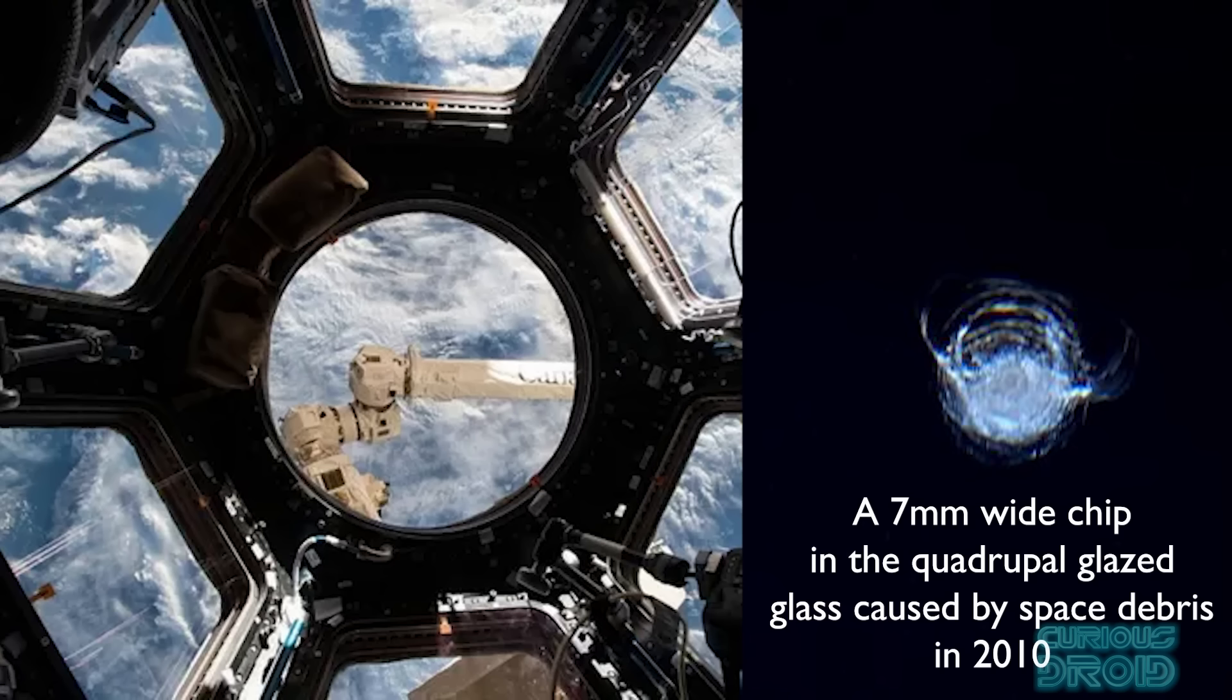One of the glass windows of the cupola on the ISS is believed to have been cracked by a similar sized piece of debris, and at this speed, even flecks of paint can become very dangerous.